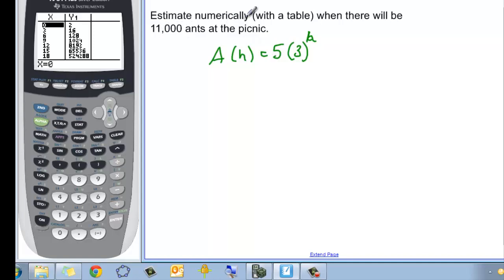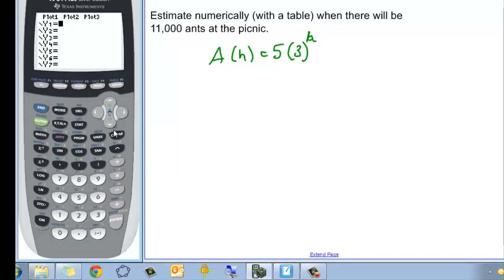So it says estimate numerically, that is with a table, when there will be 11,000 ants at the picnic. That means we need to come in here to y equals, and plug in our new equation. So five, and then times three, caret x. And then we're going to go look at our table. We're looking for 11,000. So I'm just going to scroll down here, and it happens very quickly.